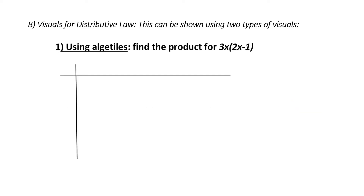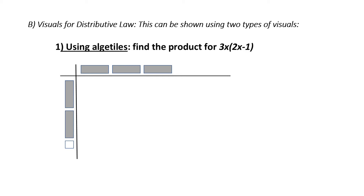Let's demonstrate this using visuals. There are two visuals we can use. The first one is algebra tiles. With algebra tiles, what we're going to do is draw two lines at 90 degrees to each other. Inside the lines is going to be the product. On the outside edges is going to be our factors — the polynomials that we are multiplying. First of all, we have 3x. An x is represented by a bar, so on one side I'm going to draw three bars with the x side facing the line. On the other side I've got 2x minus 1, so I'm going to draw two x's with the x side facing the line. But I've also got the minus 1, so I'm going to draw one small non-shaded box.